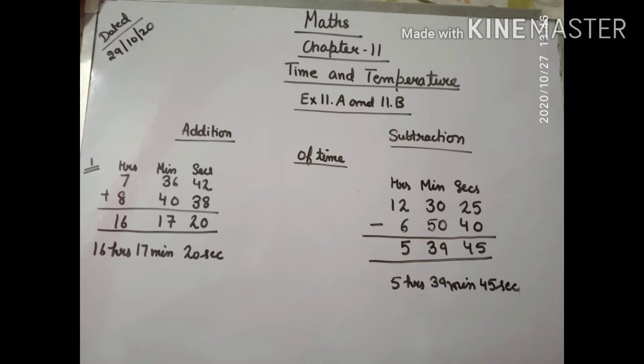Like this, subtraction में भी मुझे करना है, hours को hours में, seconds को seconds में, minutes को minutes में. And I have 12 hours 30 minutes 25 seconds. जो बड़ा है वो upper, जो छोटा होगा नीचे. Then I subtracted and I have got 5 hours 39 minutes 45 seconds. Is it clear students? Clear? Very good.